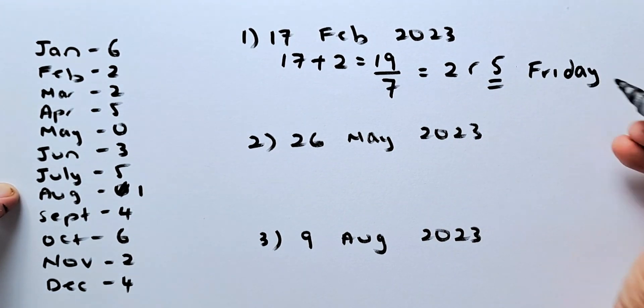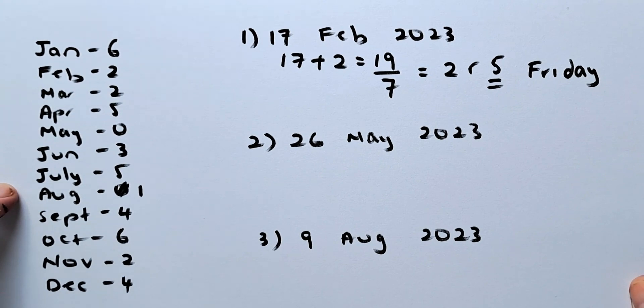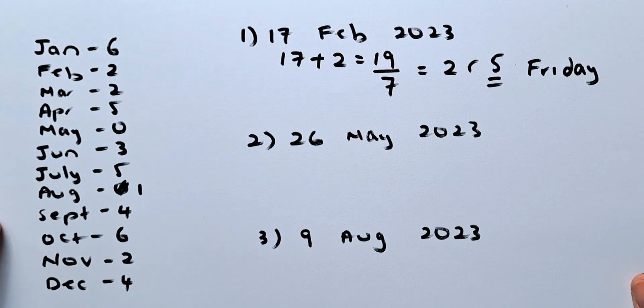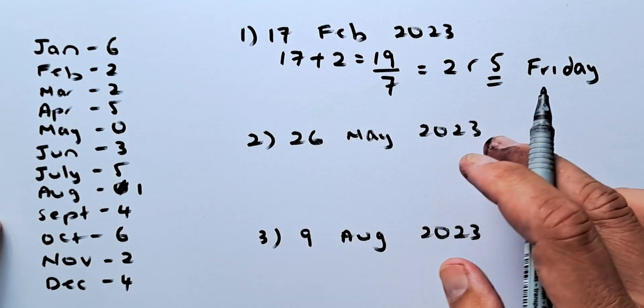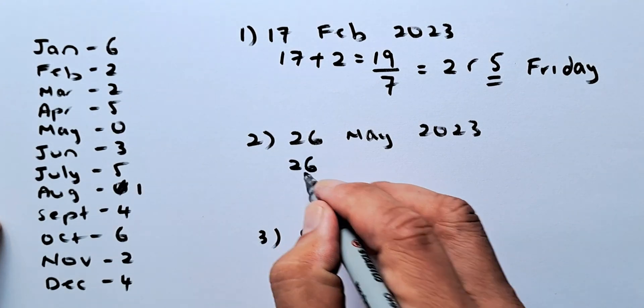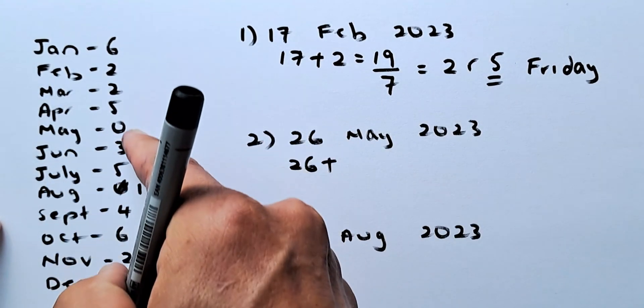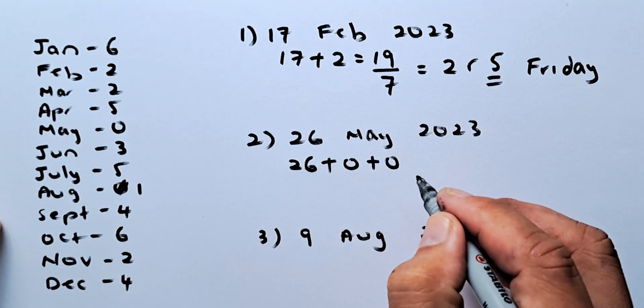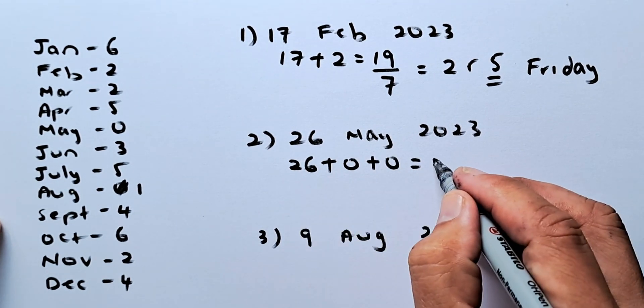So that is how you solve any date in 2023 and 2024. Now we look at the second example, 26th of May, 2023. So 26th is going to be the first, the day, 26th. May, you look at this chart, May will be 0. We are lucky. And then year also 0. And then we are going to get a total of 26.